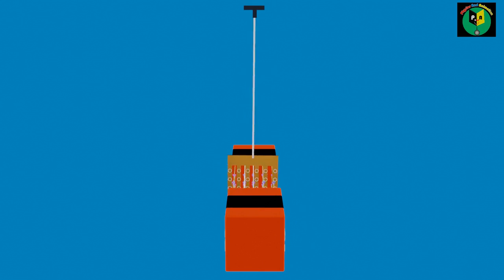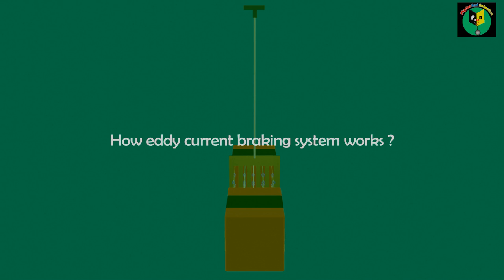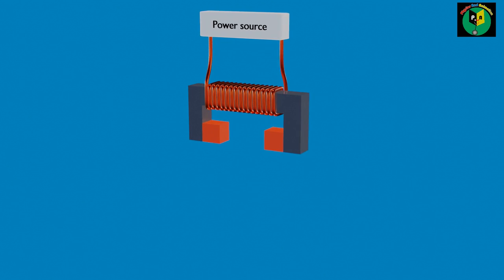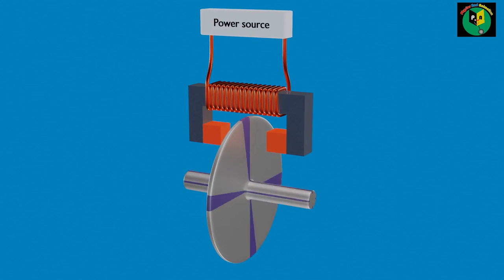Now we are ready to understand how Eddy Current helps to achieve efficient braking in automotive. To understand it, let's take a basic electromagnet arrangement which consists of a soft iron core and a coil wound over it, between which a rotating metallic disk is placed.